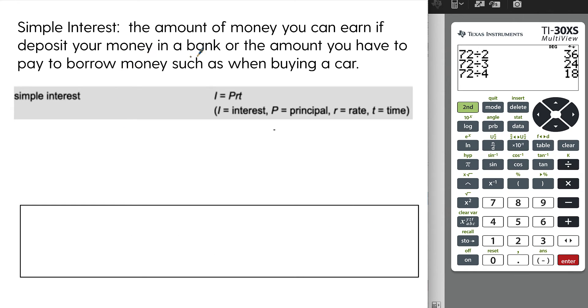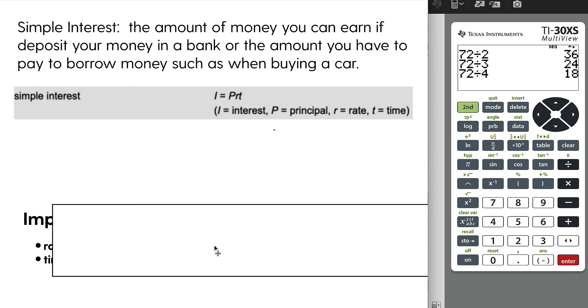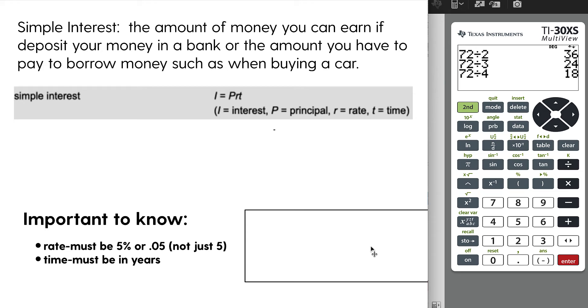Simple interest is the amount of money you will earn if you deposit your money in a bank or the amount you have to pay to borrow money, such as when buying a car or house. On the formula sheet, they give you a formula for simple interest: I = PRT, where I is interest, P is principal or your initial starting amount that you're either depositing or borrowing, and R and T are the rate and time. The rate must either be in a percentage or you have to convert the percentage into a decimal. You can't just use five.